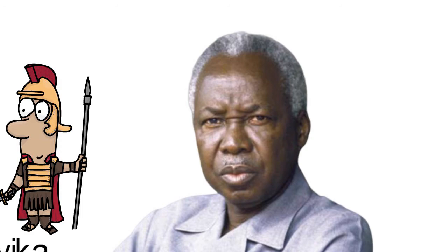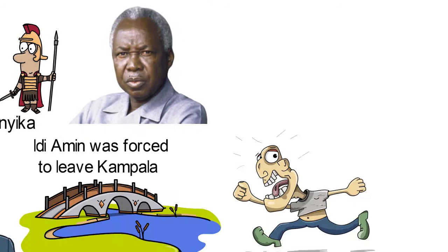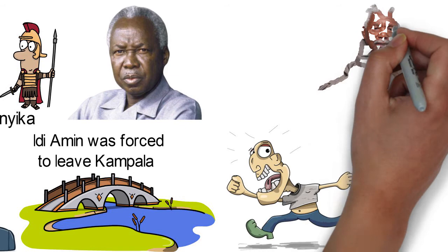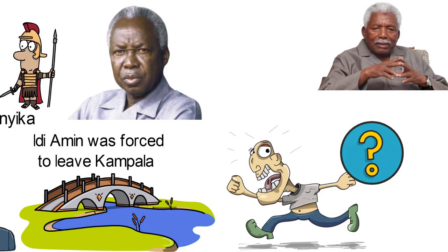In October 1985, the independence champion, Nyerere, handed over power to Ali Hassan Mwinyi, but retained control of the ruling party, Chamacha Mapinduzzi, CCM, as chairman until 1990, when he handed the responsibility of the party to Mwinyi.